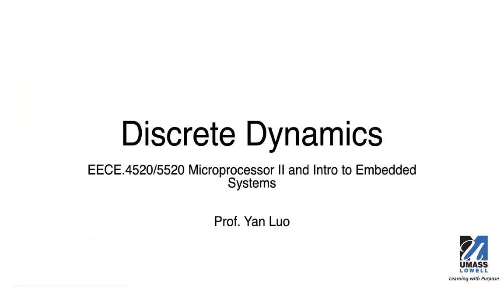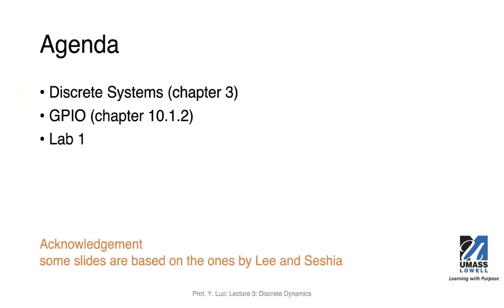Today we're going to talk about discrete dynamics, which is from the third chapter of the book. In today's lecture I will also talk a little bit about GPIO, because you will be using GPIOs in the first lab. At the end of this lecture I will talk about lab one, although I expect further discussion next week regarding lab one.